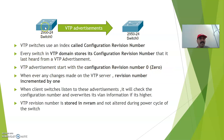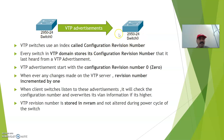Whenever any changes are made on the VTP server, the configuration revision number will be incremented by 1. Whenever the client switch listens to the VTP advertisement from the server switch, it will always check the configuration revision number. If it finds the server switch configuration revision number is higher, the client switch will accordingly overwrite its VLAN information in its database.